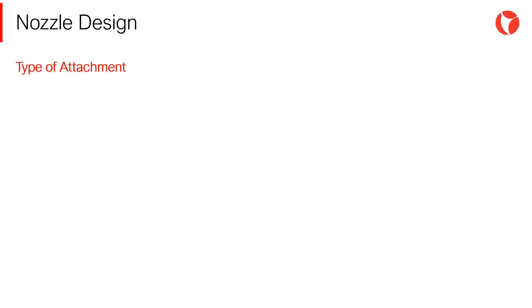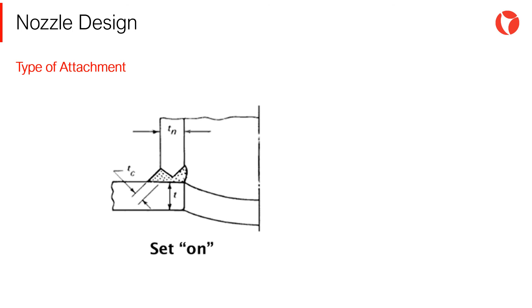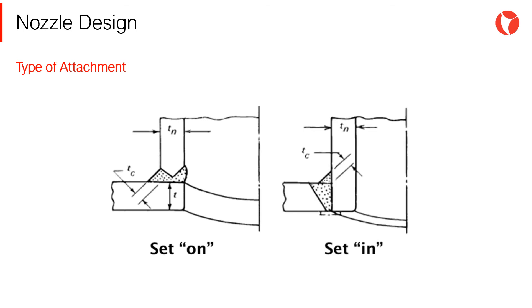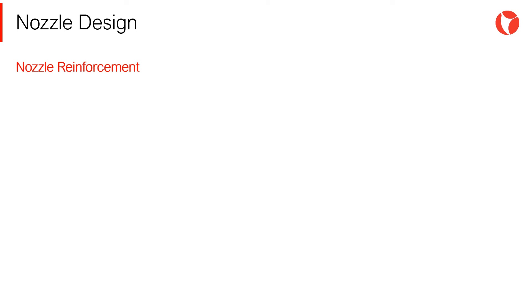Independently from the type of reinforcement, there are two ways to attach the nozzle with the shell or body. Seton type: the diameter of the opening in the shell coincides with the inner diameter of the neck, and the nozzle is supported by the shell or head. Or setting type: the diameter of the opening in the shell coincides with the outer diameter of the neck, and the nozzle passes through the shell or head. This material restoration can be achieved by increasing the thickness of the shell, increasing the thickness of the neck, or adding an external element.